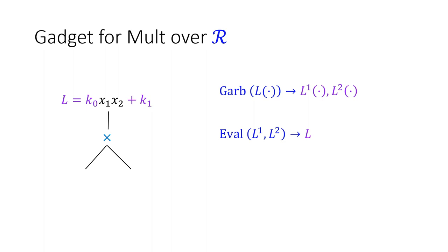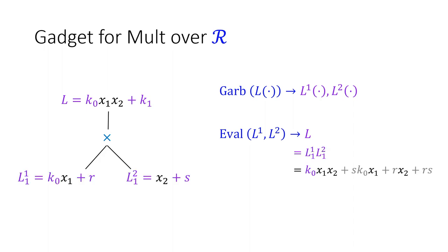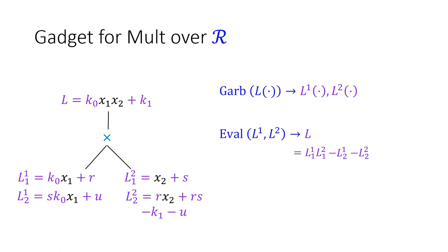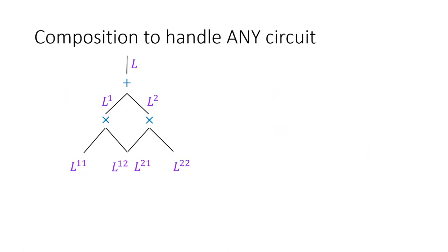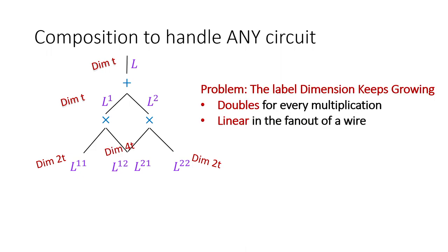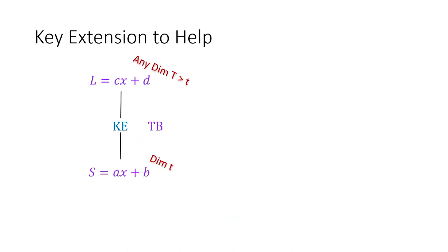For the multiplication gate example, the garbler is given a target label function L and must engineer two input labels so the evaluator can combine them to reveal L and nothing else. The important thing to note is that in this gadget, the label dimension of input labels is twice the dimension of the target label. If we compose gadgets to handle a circuit, label dimension doubles after every multiplication layer, becoming exponential in circuit depth. This restricts us to log-depth circuits using gadgets alone, which is why we need a key extension.